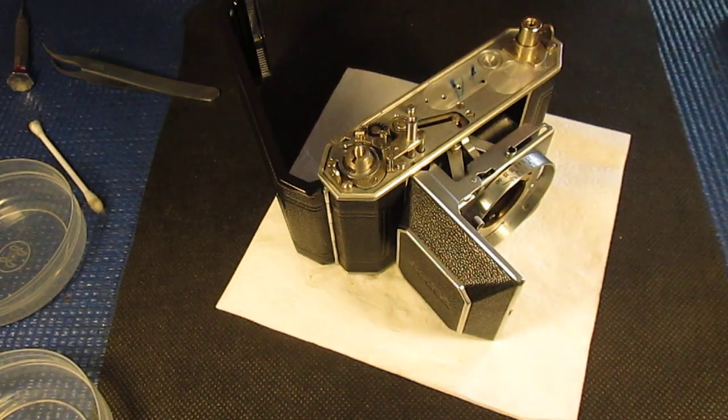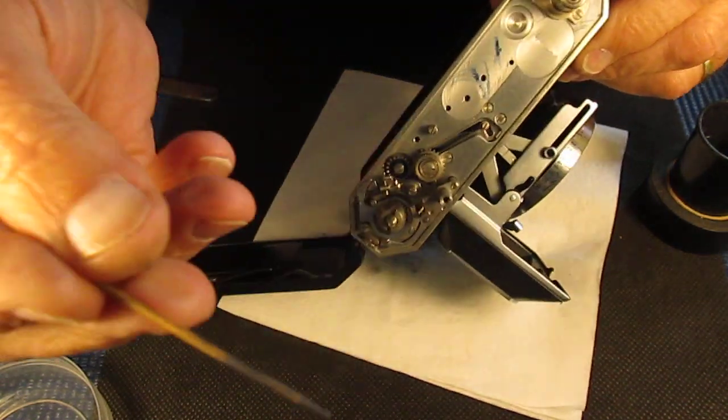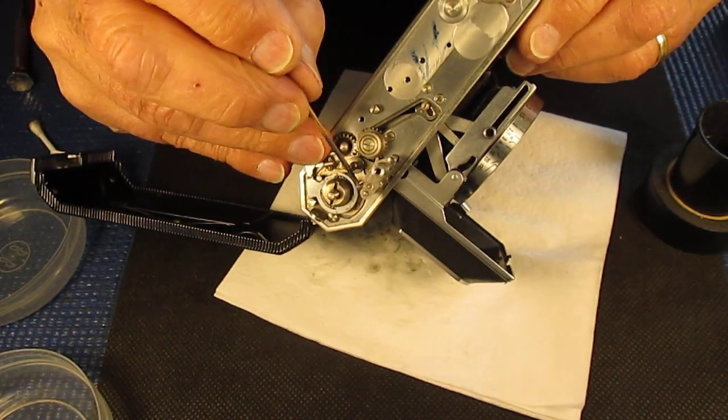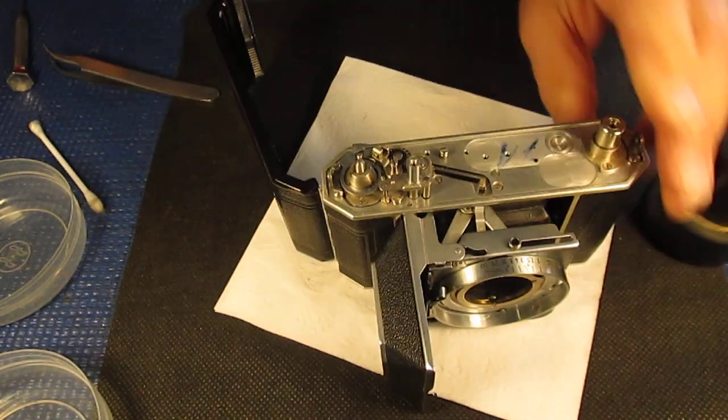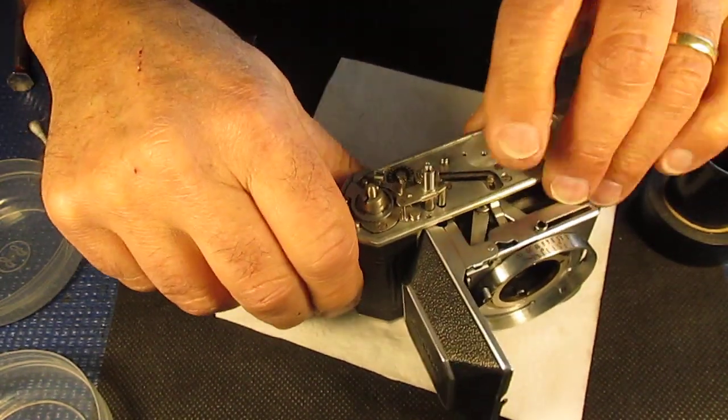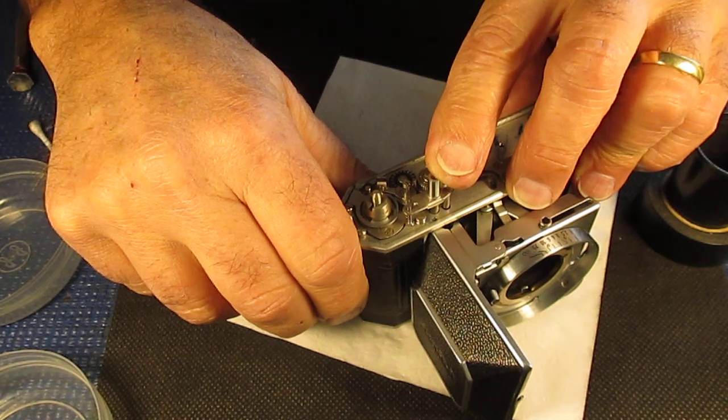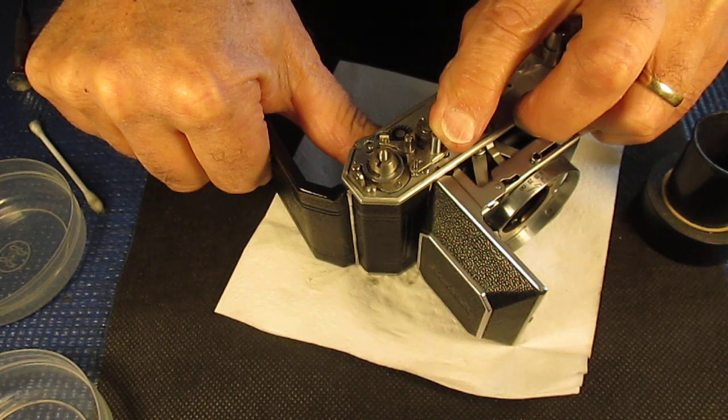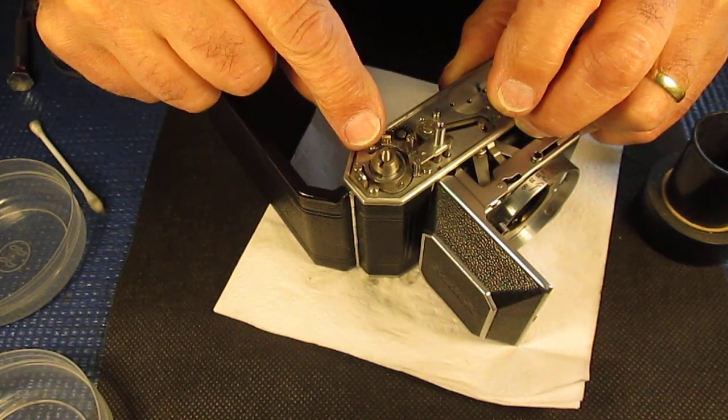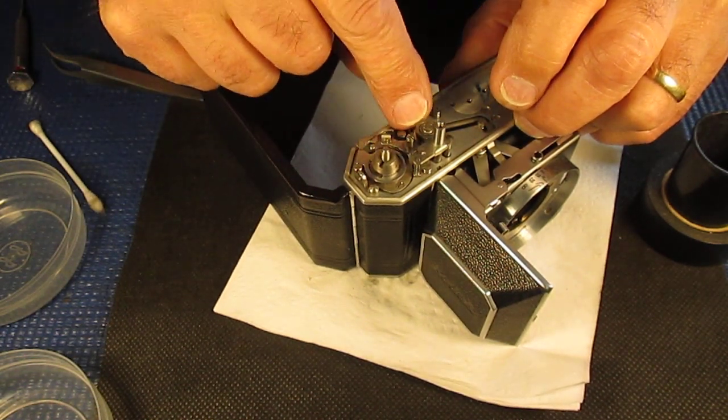To make sure it runs smoothly and releases smoothly, I take some molybdenum paste and run it on that sloped surface there. That's where the shutter release comes down, pushes that across, which pulls this cam out of contact.